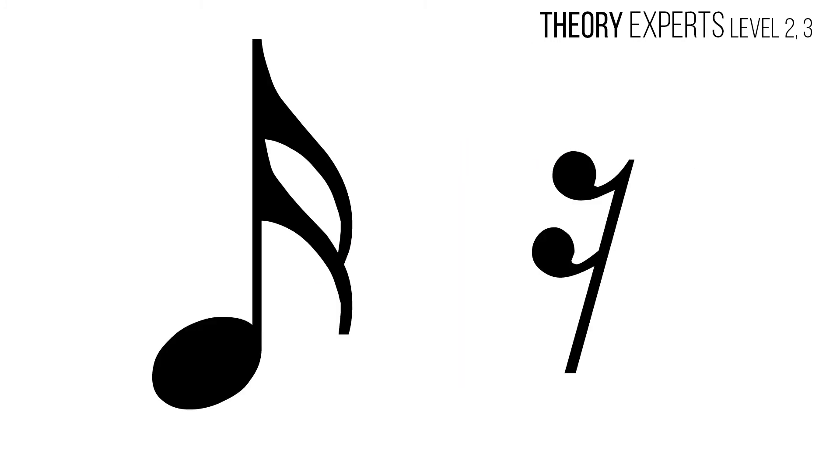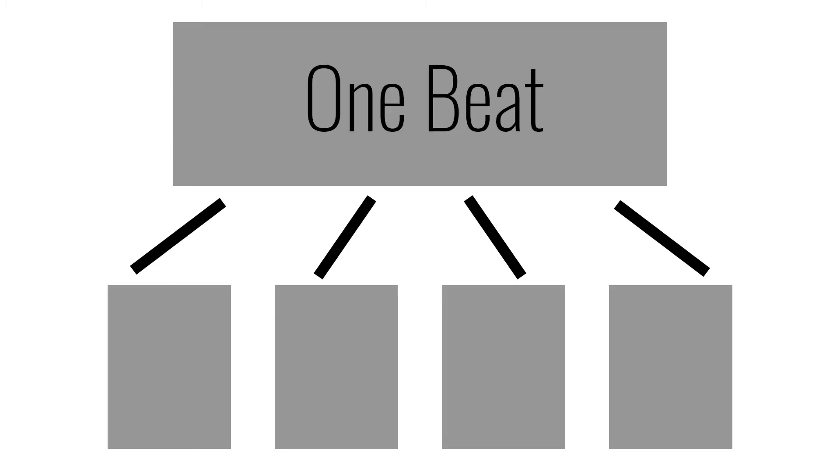Sixteenth notes and rests are each worth a fourth of one count. We break the beat into four parts, giving the first part the count number, the second part the e, the third part the and, and the fourth part the uh.